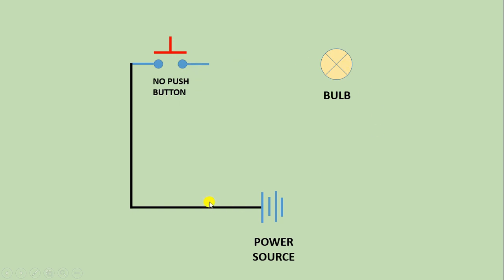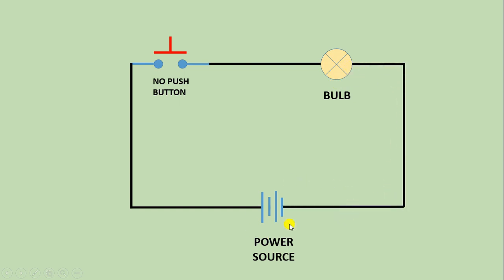To complete this circuit, with the second terminal of the push button, connect one wire and provide positive power supply to the lamp. Then with the negative terminal of the bulb, connect one wire to the negative terminal of the power source. After this connection, if you press the push button, the bulb starts glowing. You can see that by pressing the push button, power supply is flowing forward to the bulb. If you release it, the push button goes back to its normal position.